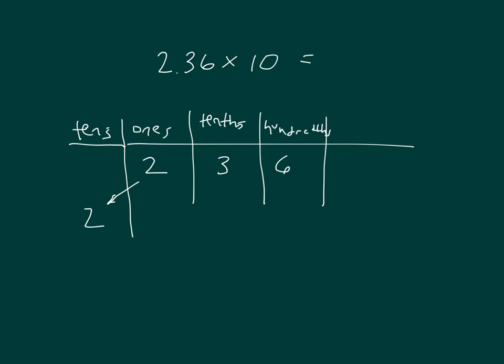When you multiply the 3 tenths by 10, they become ones. And the hundredths by 10 become tenths. So our new number, 2 tens, 3 ones, 6 tenths. So 2.36 or 2 and 36 hundredths times 10 is 23 and 6 tenths.